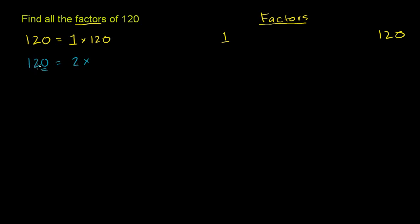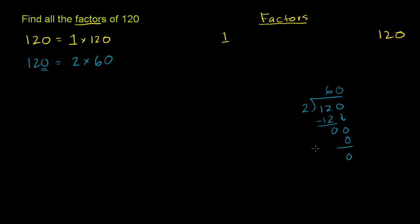To figure out what you have to multiply by 2 to get 120: 120 is 12 times 10, or another way to think about it, it's 2 times 6 times 10, or 2 times 60. You could divide it out — 2 goes into 12, 6 times; 6 times 2 is 12; subtract, bring down the 0; 2 goes into 0, 0 times; no remainder. So it goes 60 times. So the next lowest factor is 2, and the next highest factor is 60.